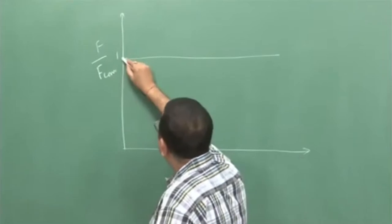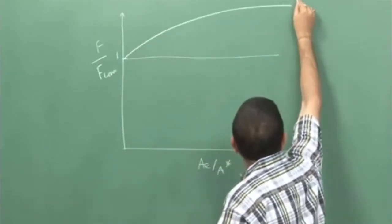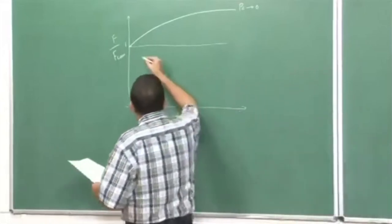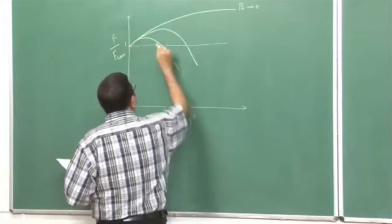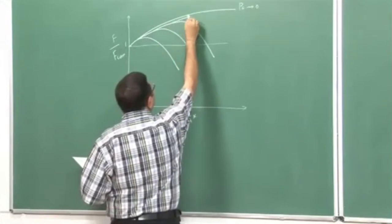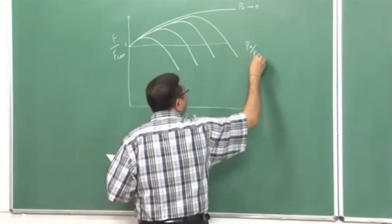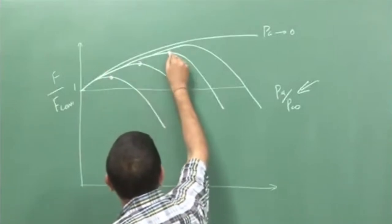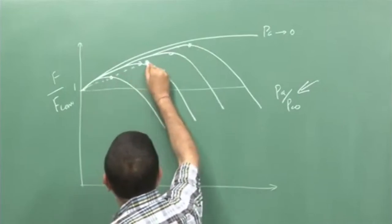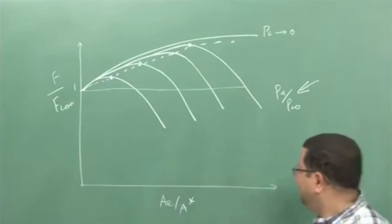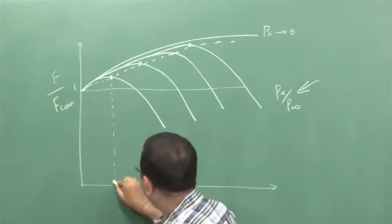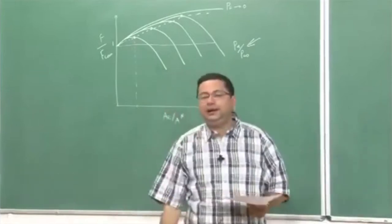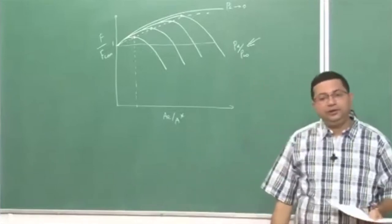After that, we discussed that for the limiting case when atmospheric pressure tends to 0, we get the ultimate thrust. For other values of atmospheric pressure, the thrust increases, reaches a maximum, and then starts to decrease. This is for increasing PA by PC0. There is a point corresponding to each value of PA which gives us the optimum thrust — when the area ratio is such that Pe equals PA, the exit pressure equals atmospheric pressure, and we get maximum thrust because in that case the expansion is ideal.